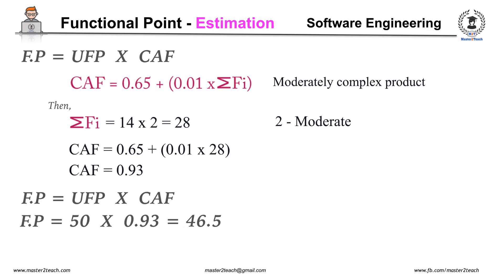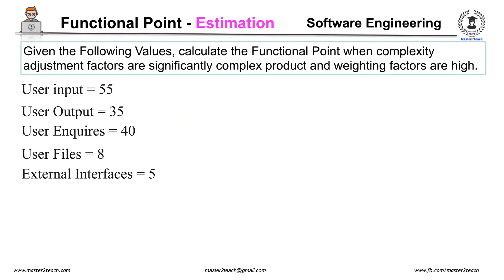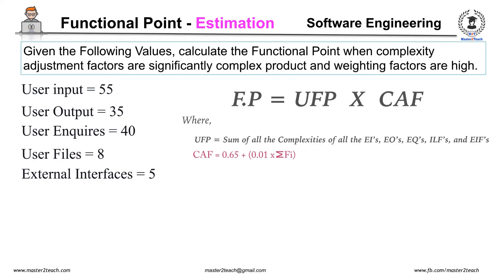Let's see one more example of calculating functional point. Given the functional values, calculate the functional point when complexity adjustment factors are significantly complex product and weighting factors are high. User input is 55, user output is 35, user inquiry is 40, user files 8, and external interface is 5. We know that Functional Point equals UFP times CAF, where UFP is the sum of all the complexities of the five input variables, and CAF equals 0.65 plus 0.01 times summation Fi, where summation Fi is the value adjustment factor.